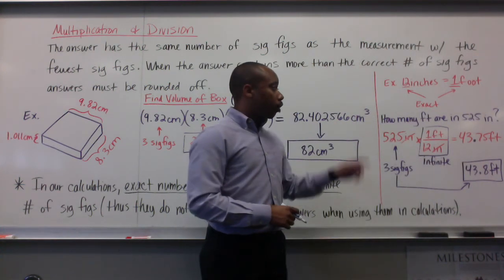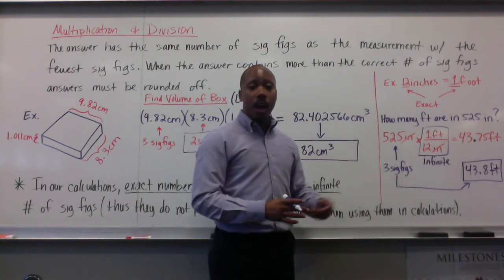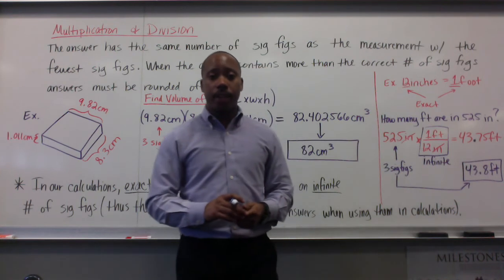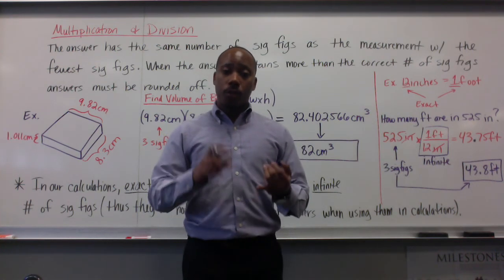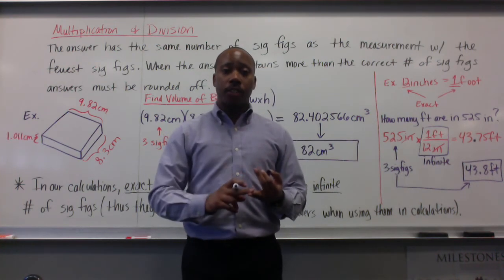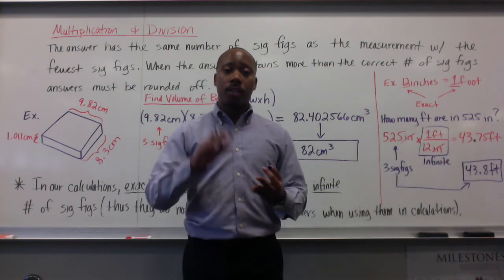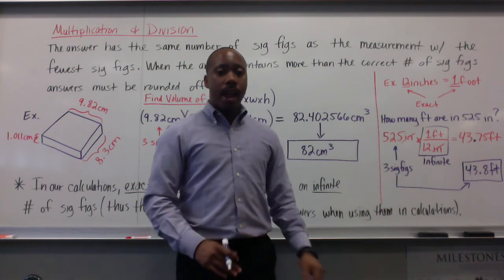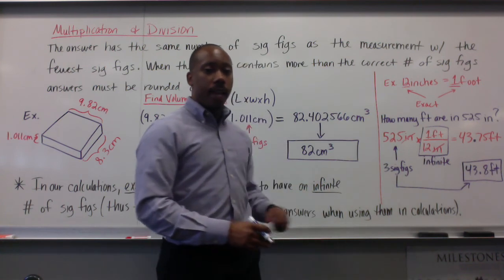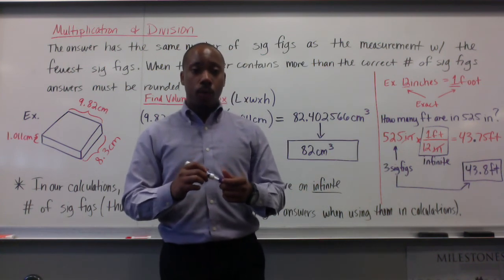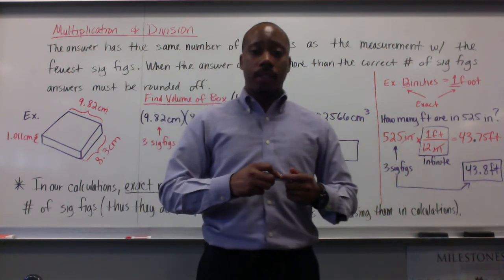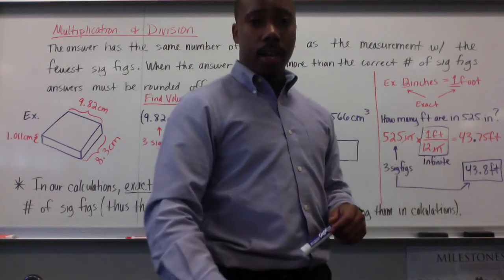So 43.75 will be rounded to 43.8 feet. Gentlemen, this is how you account for significant figures in your calculations — through addition, subtraction, multiplication, division, and using exact numbers. Take notes. We'll do more practice with this in class. Adios.